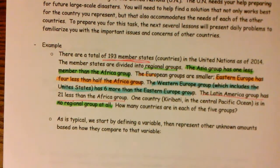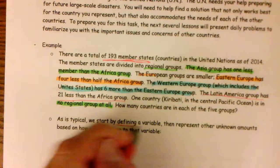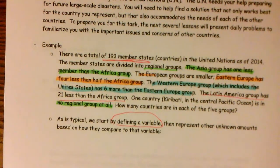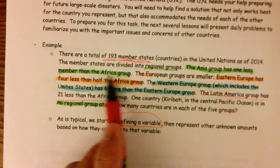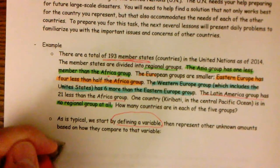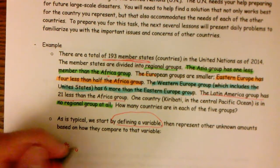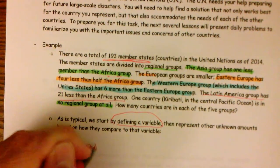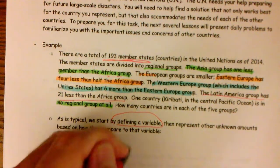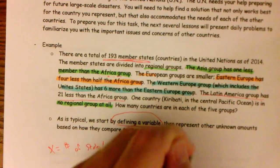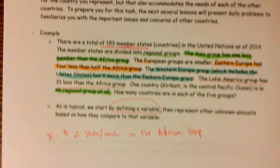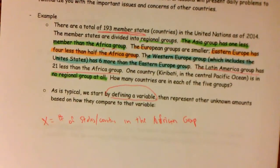All right. So what they really want us to do here is they want us to define a variable. And then we can represent all the unknown amounts using comparisons to that variable. And since it looked like to me that most of these were compared to the African group, we are going to make X equal the number of states slash countries in the African group.